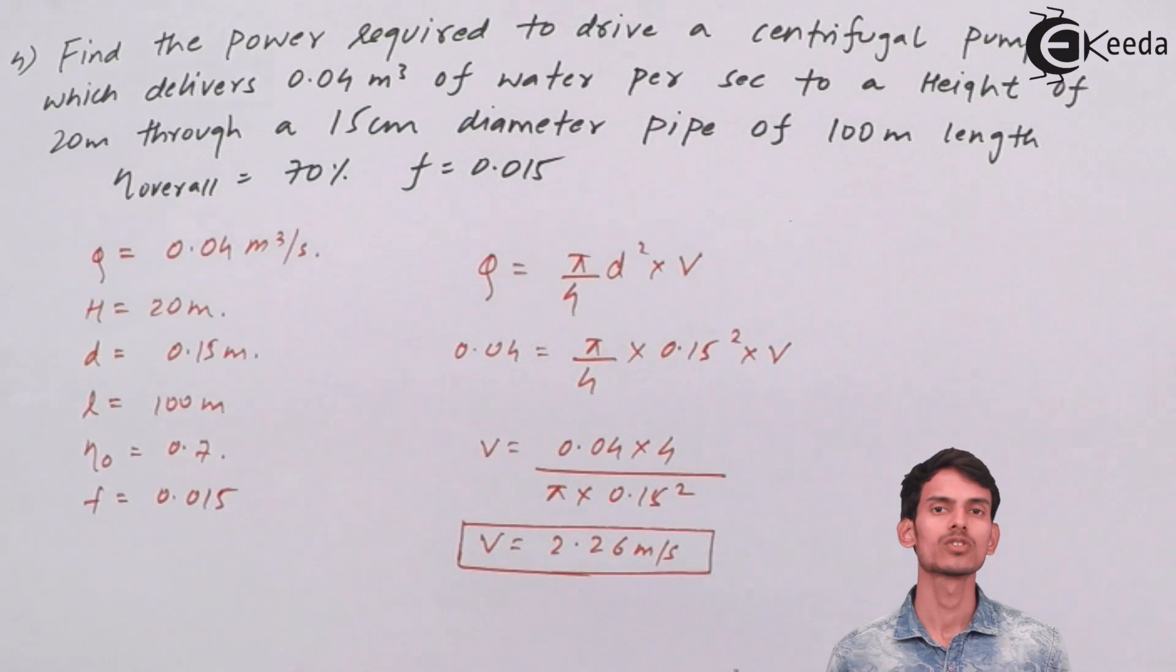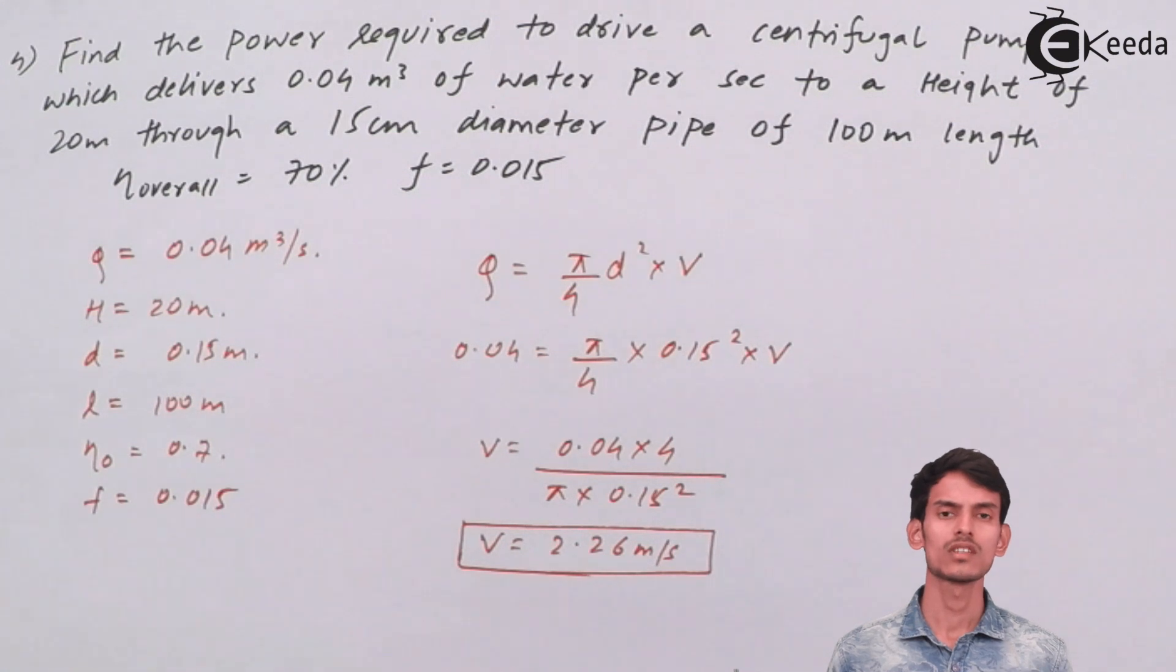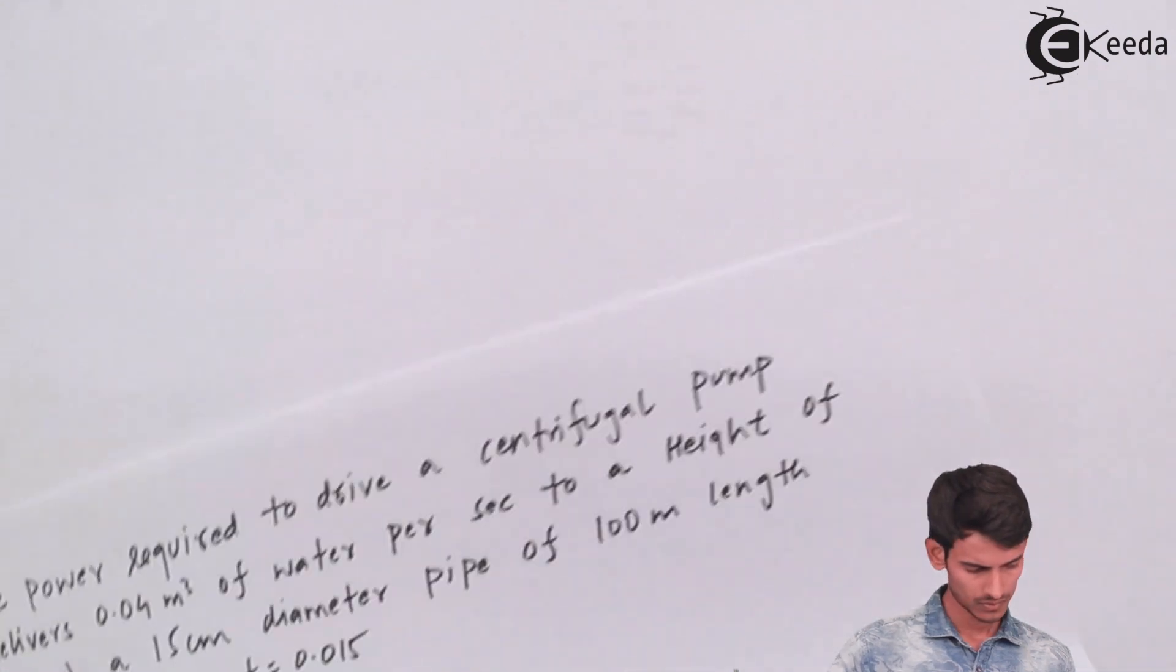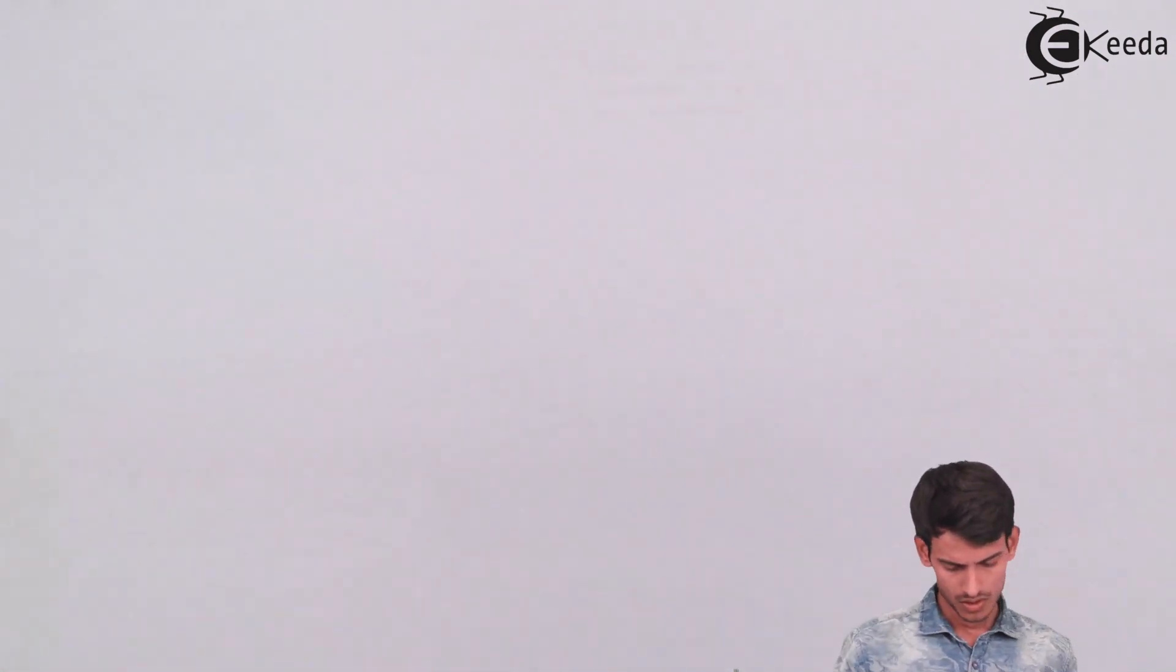We need velocity because we've already seen head loss in Chapter 3, Losses in Pipes. For head loss due to friction, you need to know the value of velocity. So let's calculate the value of head loss due to friction.